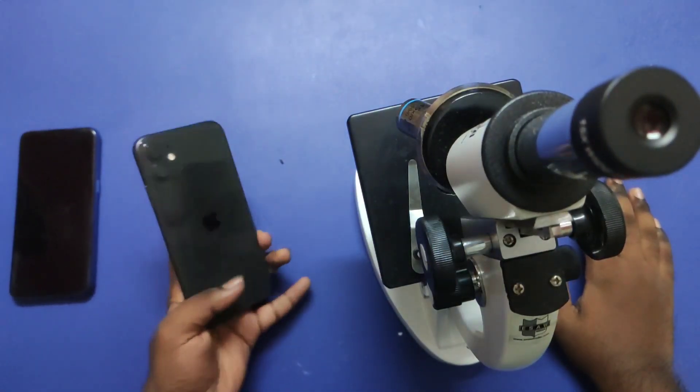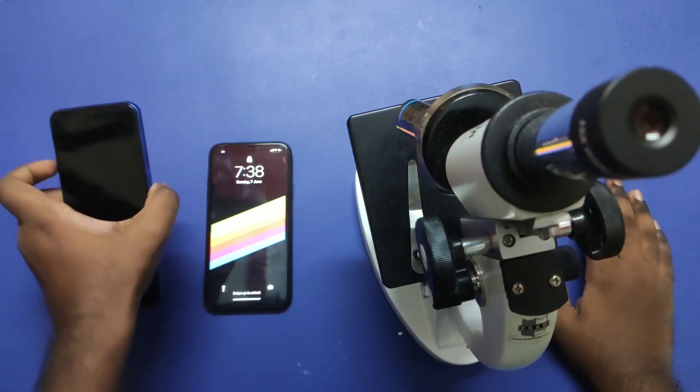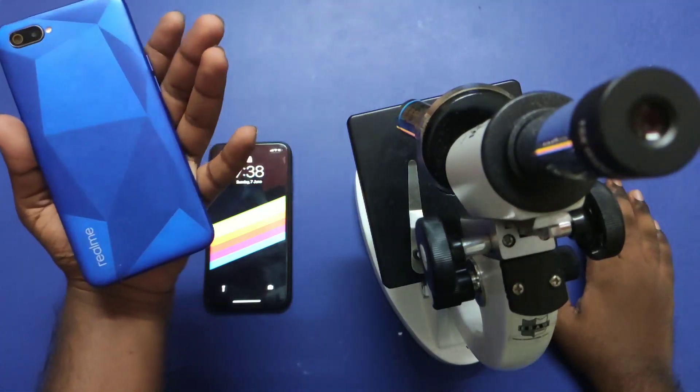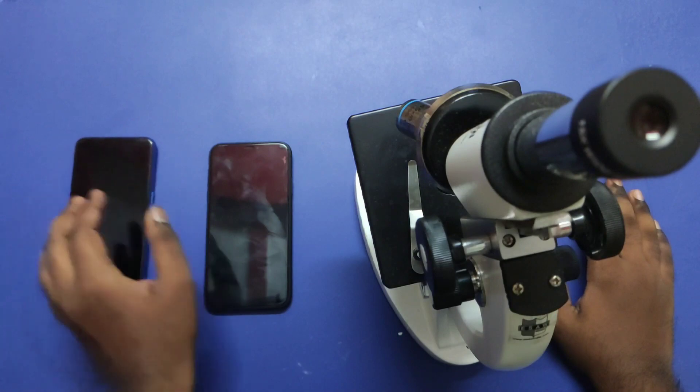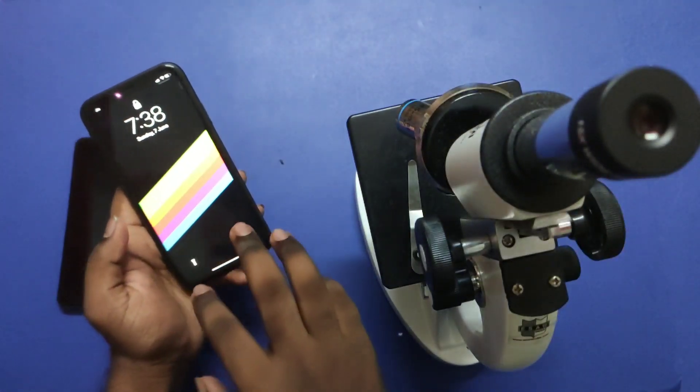Hi guys, we have pixels on the phone display. But if you look at the pixels, you can see the pixels on the microscope.